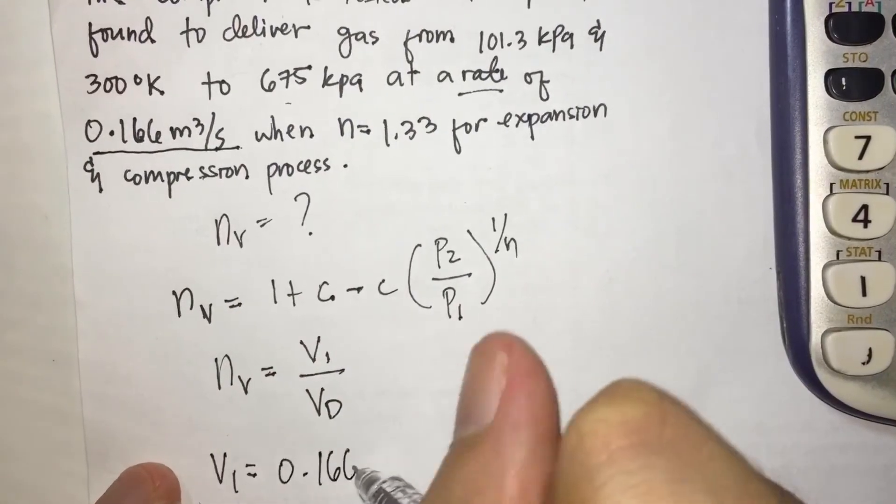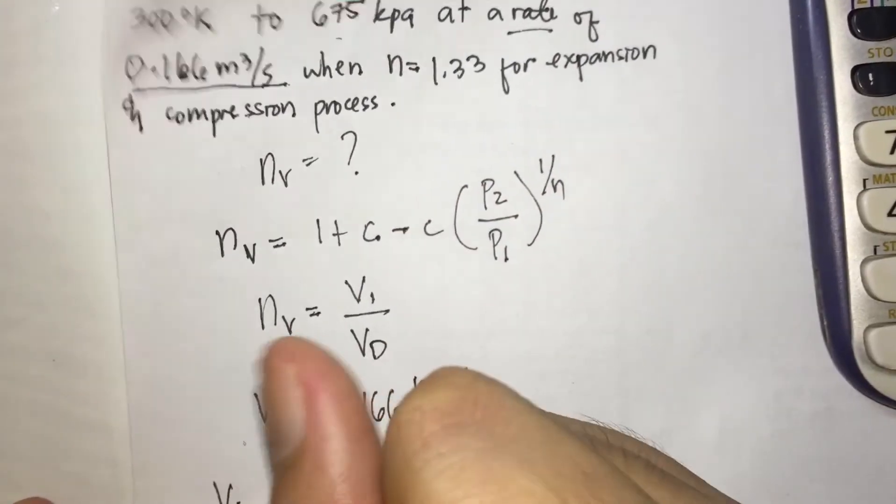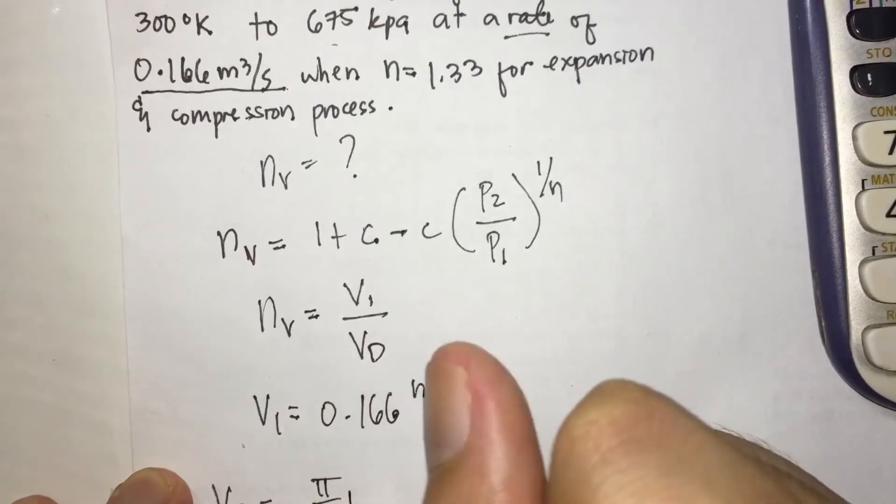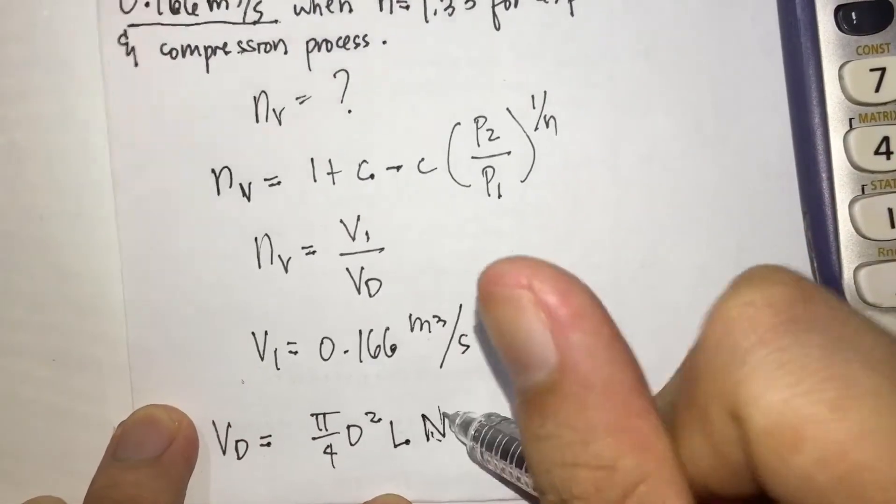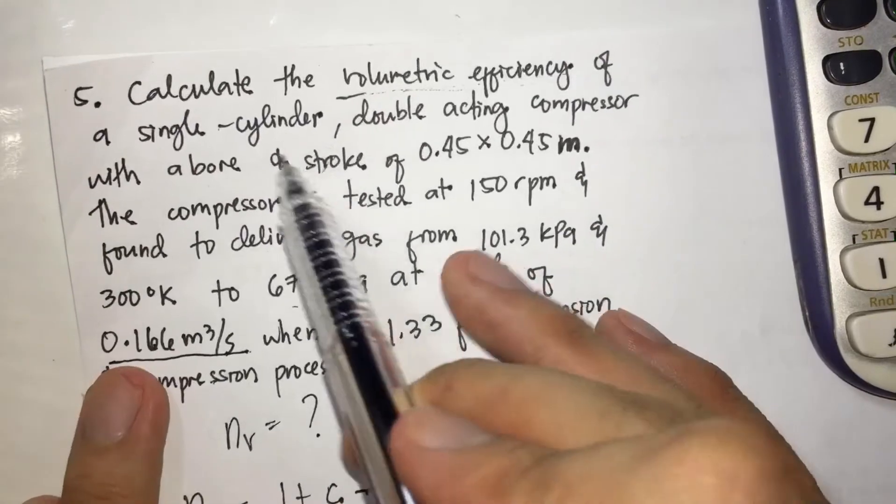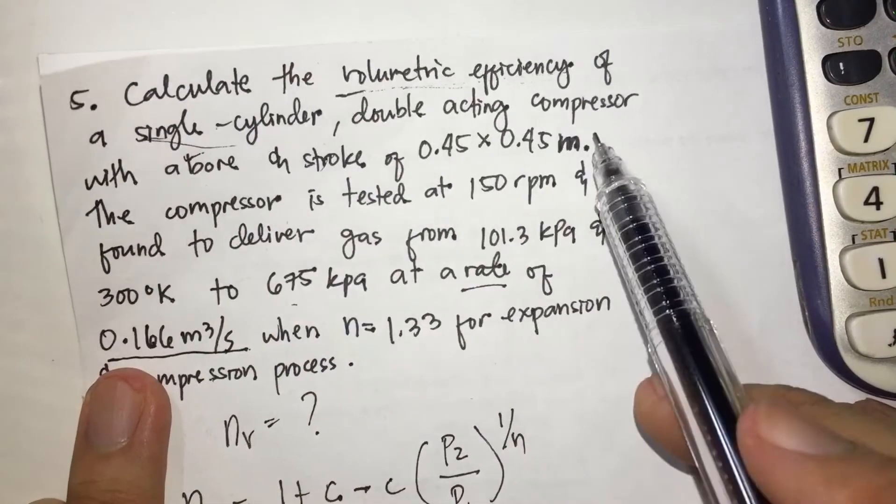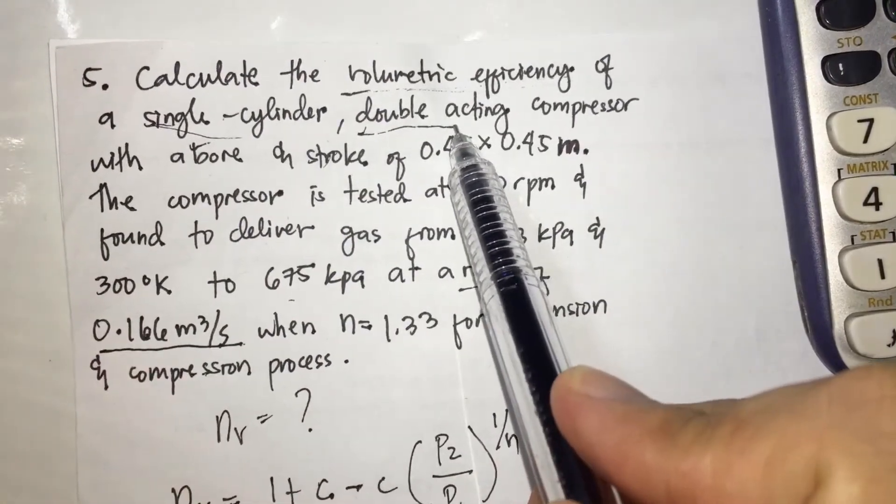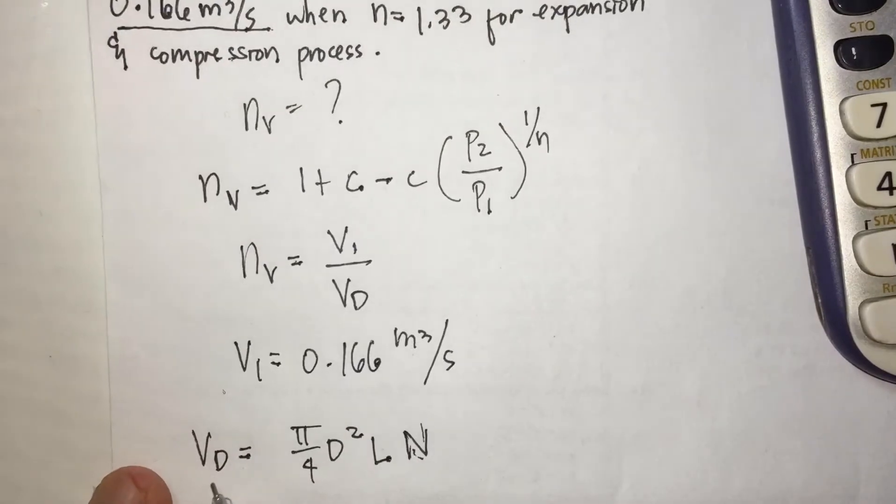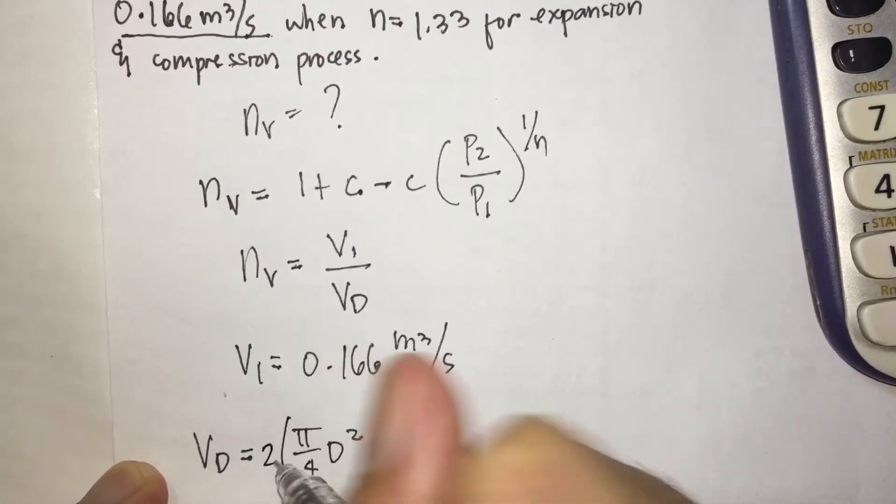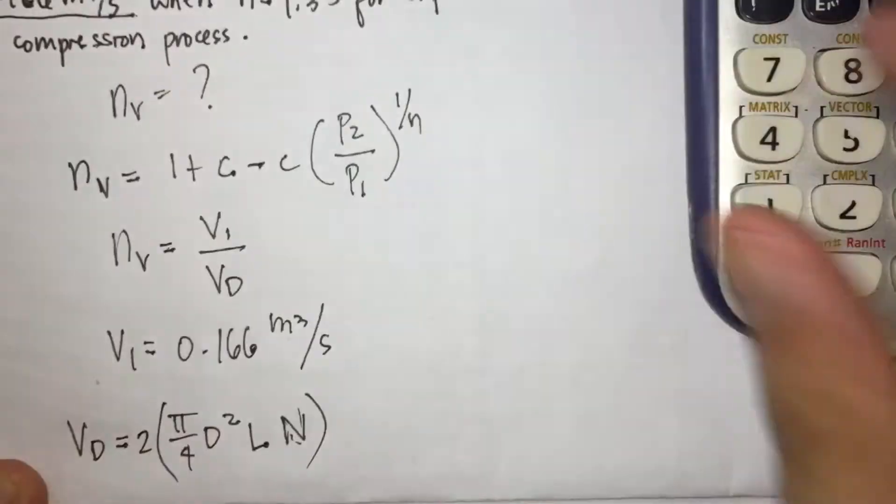And we'll find VD which is volumetric displacement, pi over 4, D squared times stroke times N. But you should look carefully at the problem because it says single cylinder double acting compressor. When there's double acting, the volume displacement should be times 2. That's where you'll make a mistake if you don't see the double acting, you won't multiply by 2.